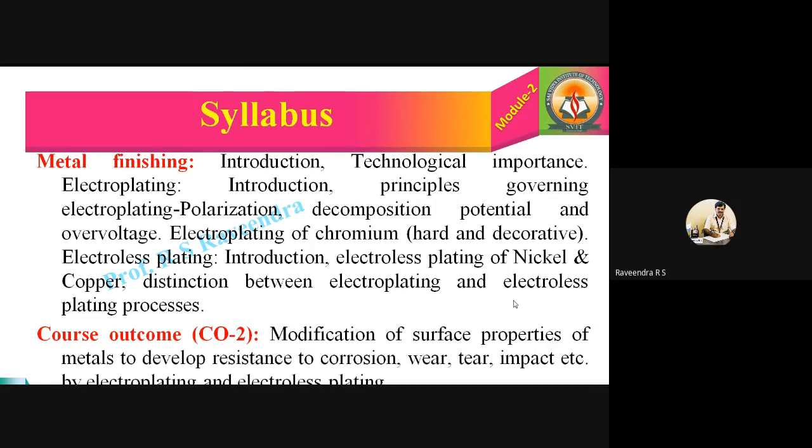It is also coming under Course Outcomes 2 — modifications of surface properties of metals to develop resistance to corrosion, wear, tear, impact, etc., by electroplating and electroless plating, along with corrosion. So this is coming under Course Outcomes 2, that is CO2.